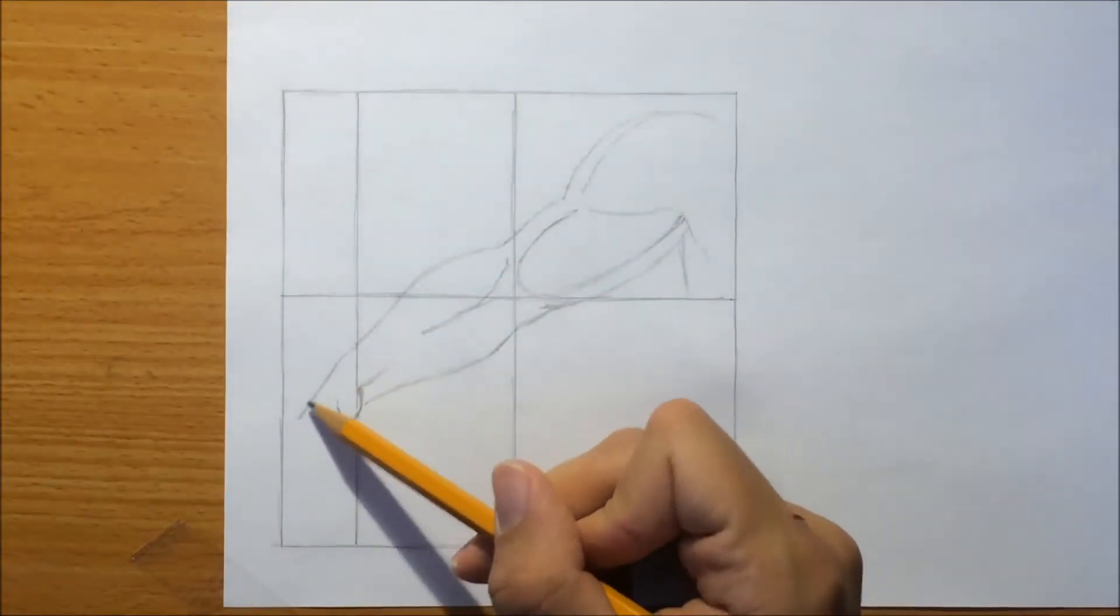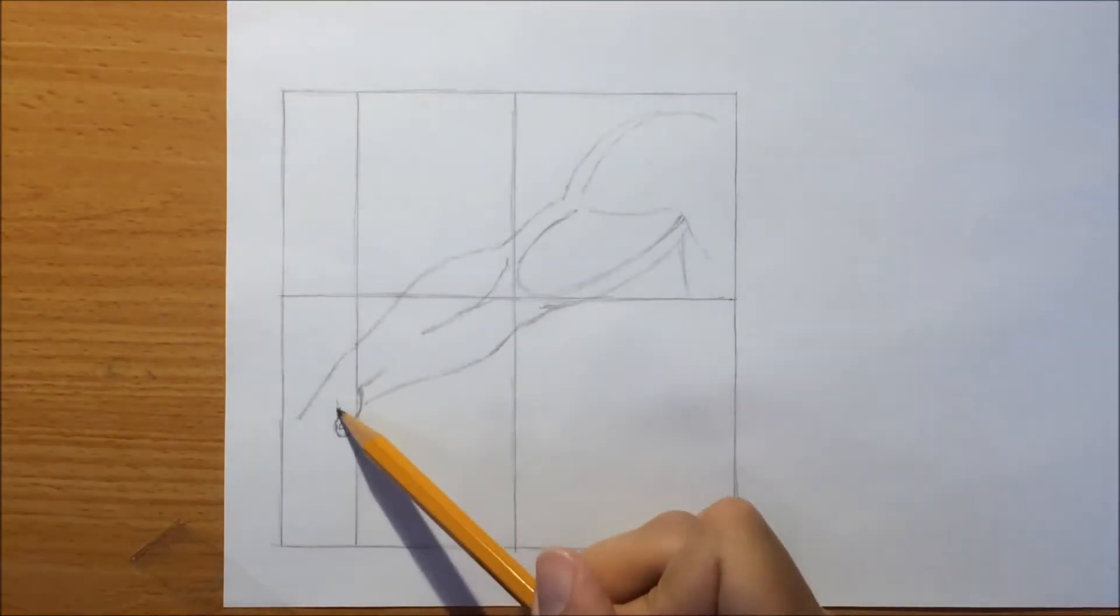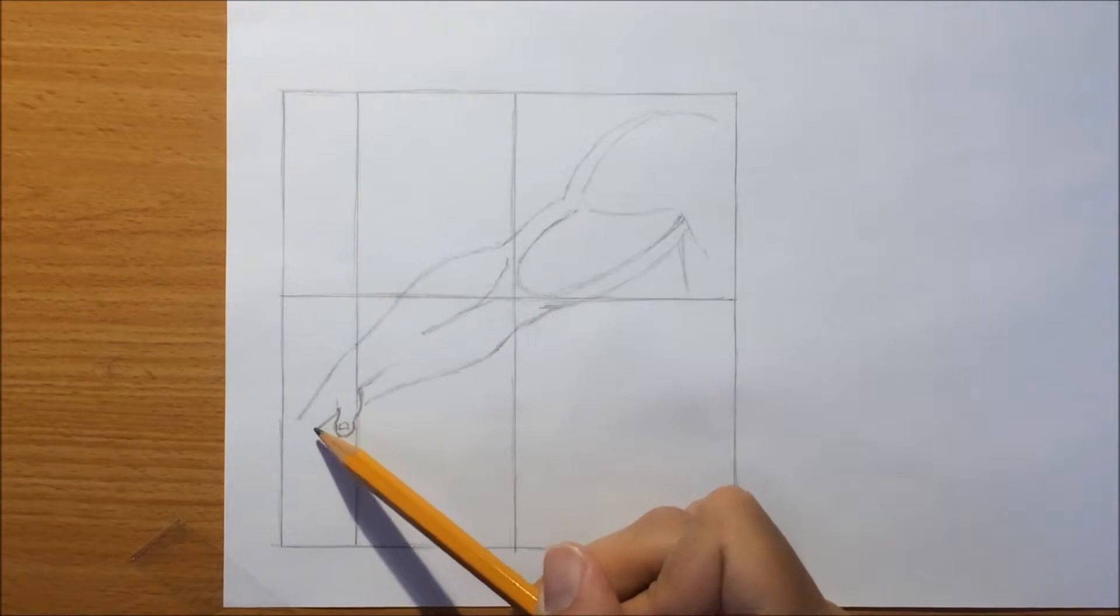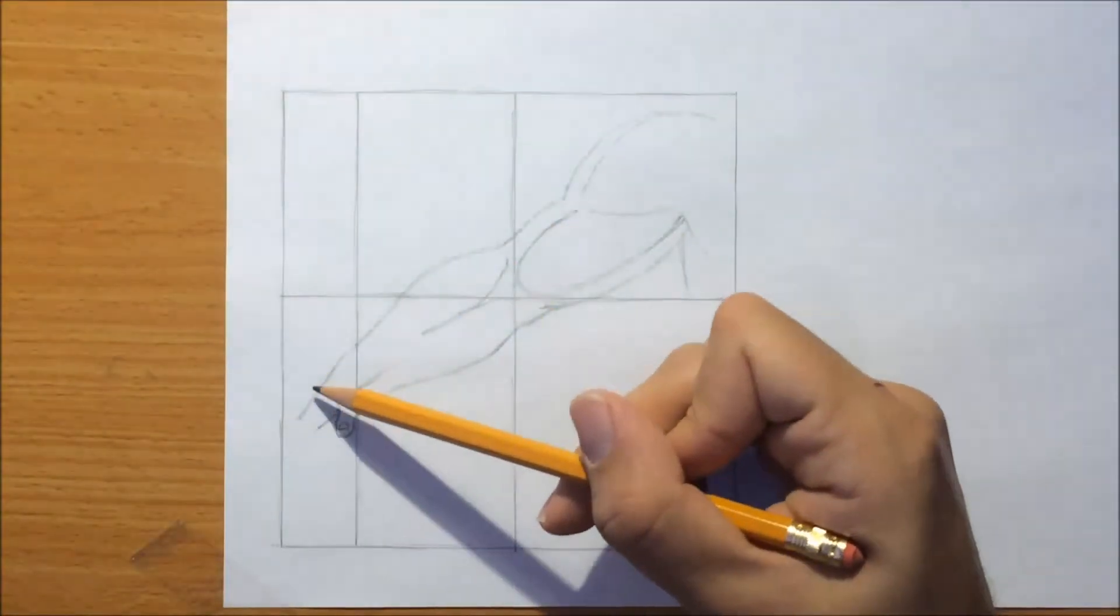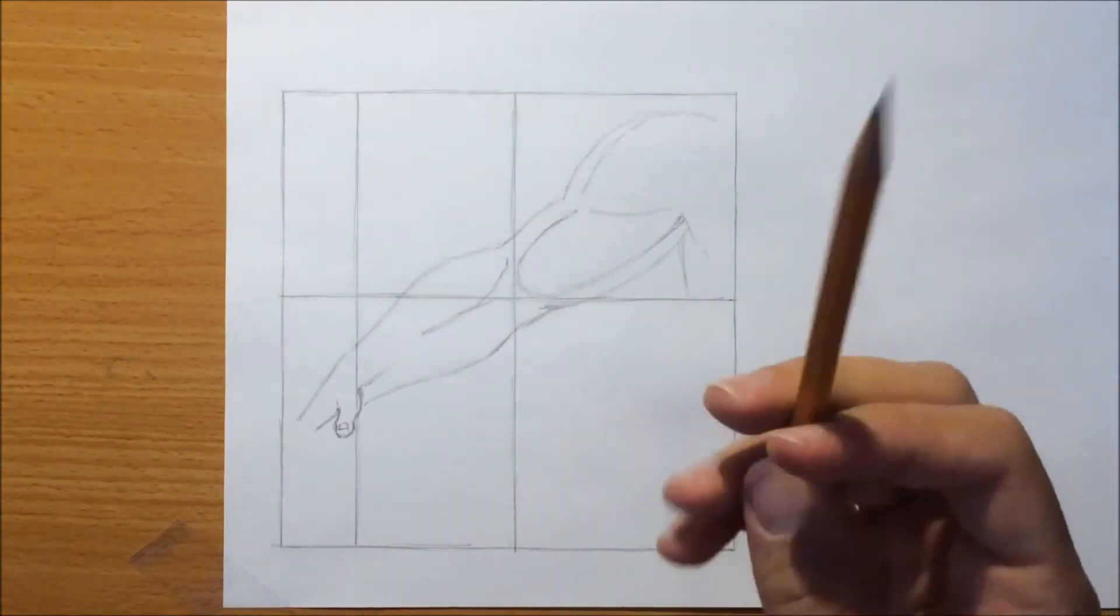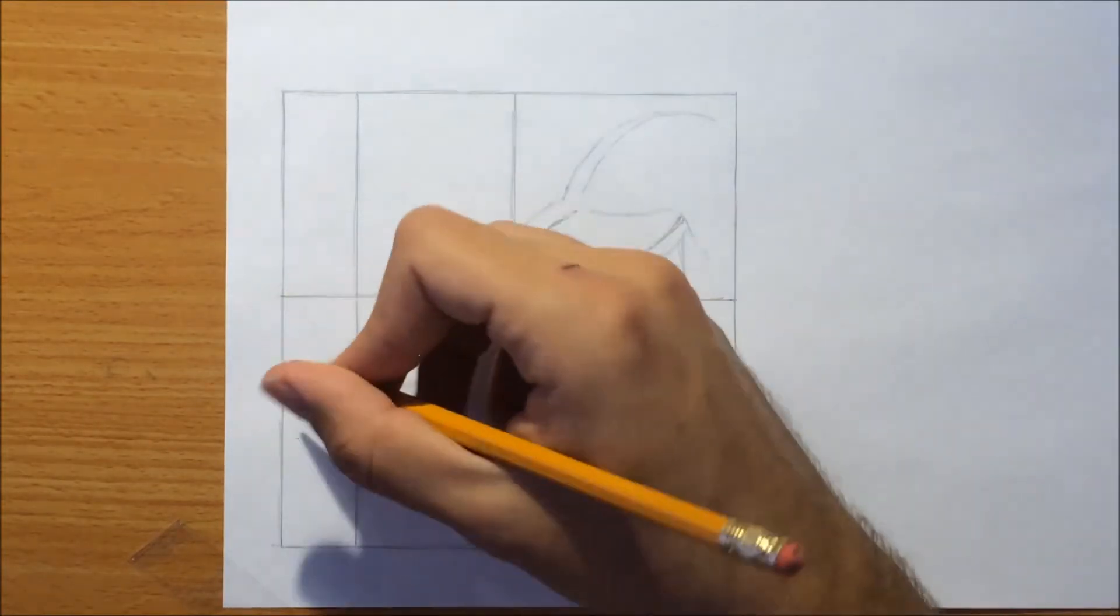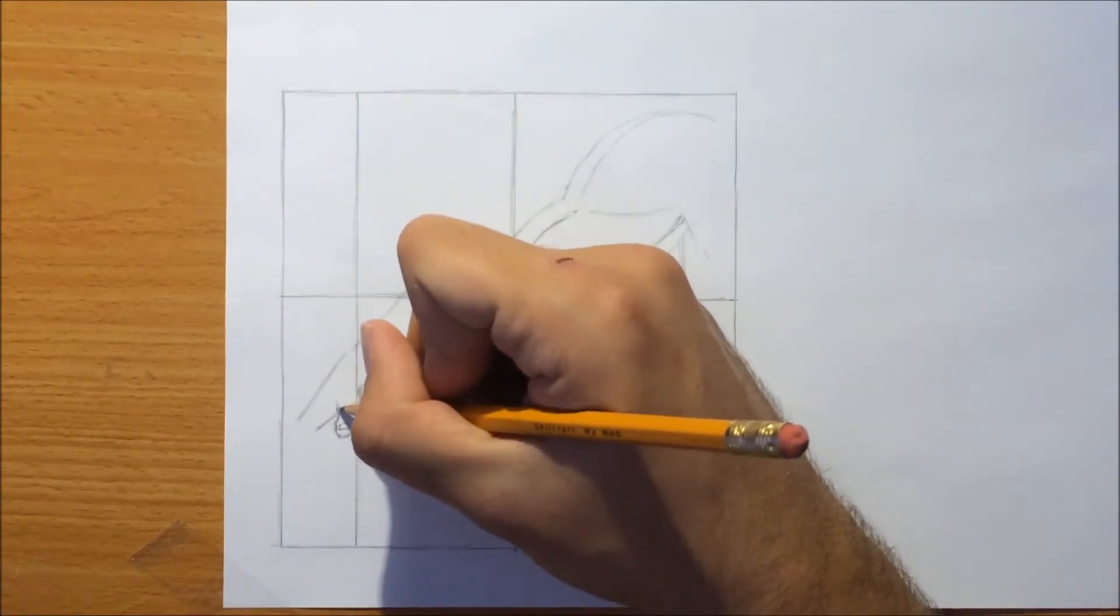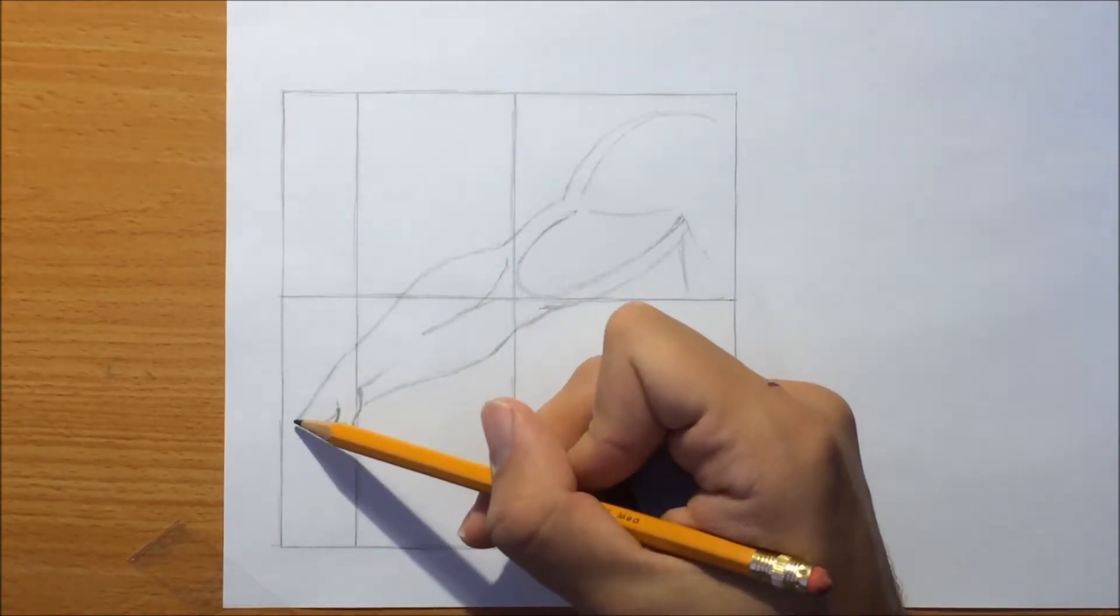Now, we want to begin indicating the fingers. And so, in order to do that, we'll continue this line here that represents this part. And we can begin drawing the fingers. Now, I think the thumb looks a bit big to me, the way I drew it. But let's leave it at that for now. I may correct it later on.